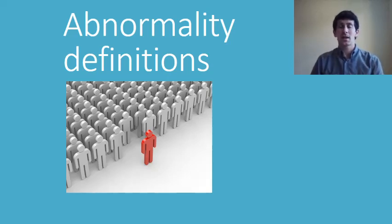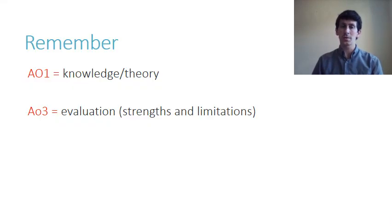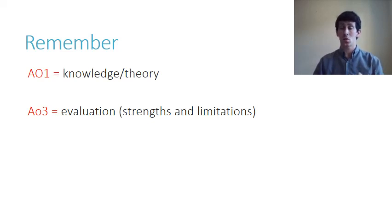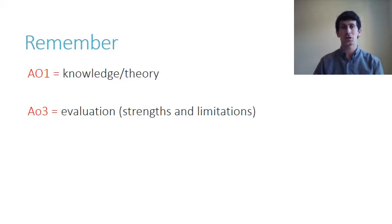We're going to have a look at the next definition: the deviation from social norms. Let's quickly recap. Remember, all the AO1 is the theory, the definitions. The AO3 is all about evaluation — the strengths and the limitations of the definition.